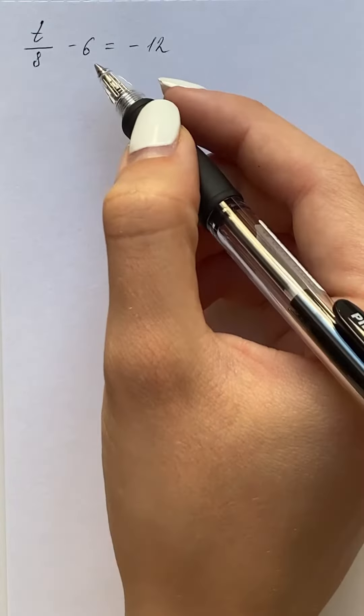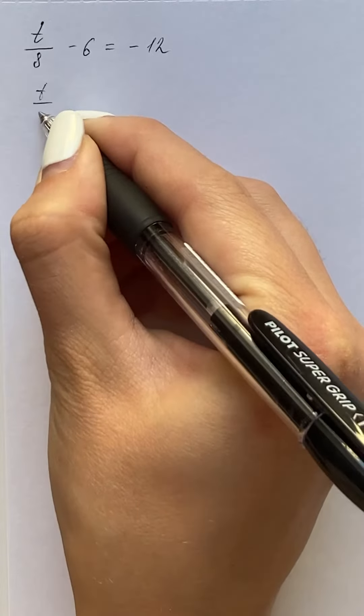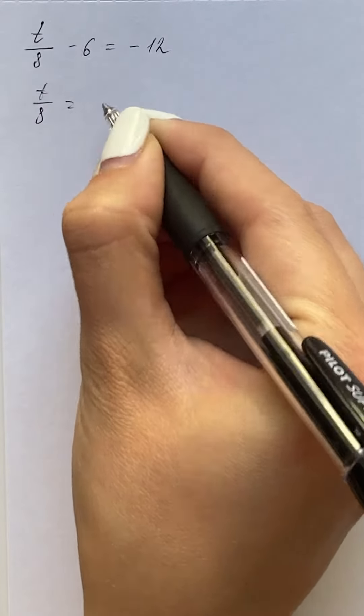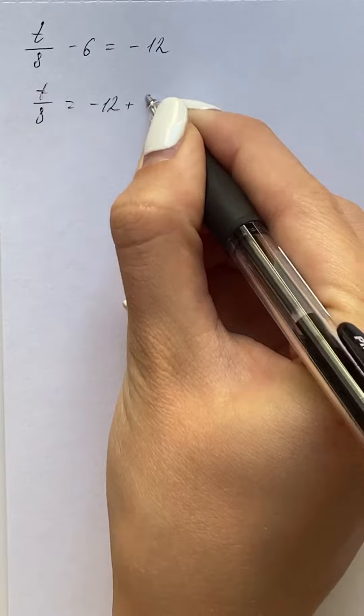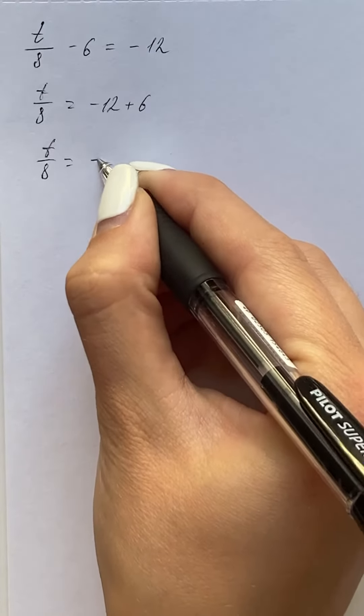So at first we're going to add 6 to both sides of the equation, so we get t over 8 equals negative 12 plus 6, and that's going to be negative 6.